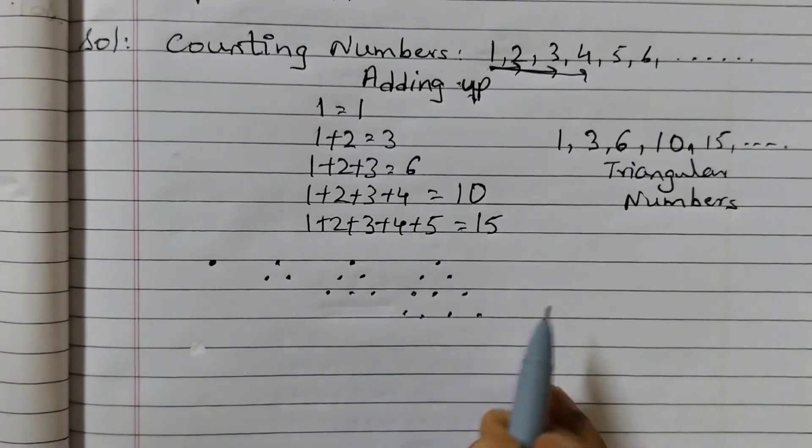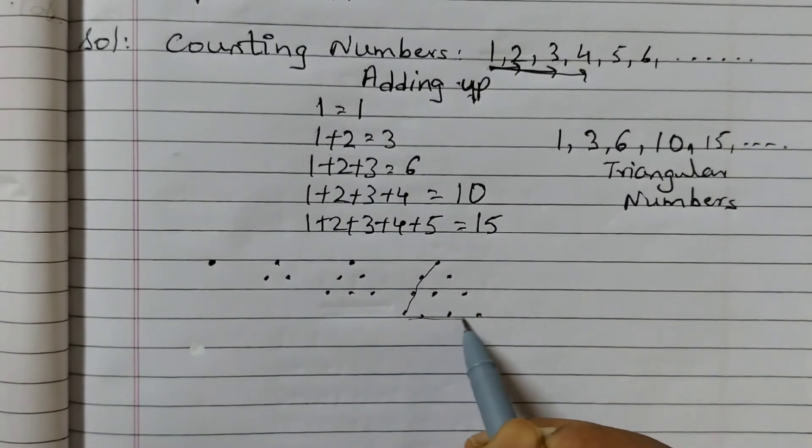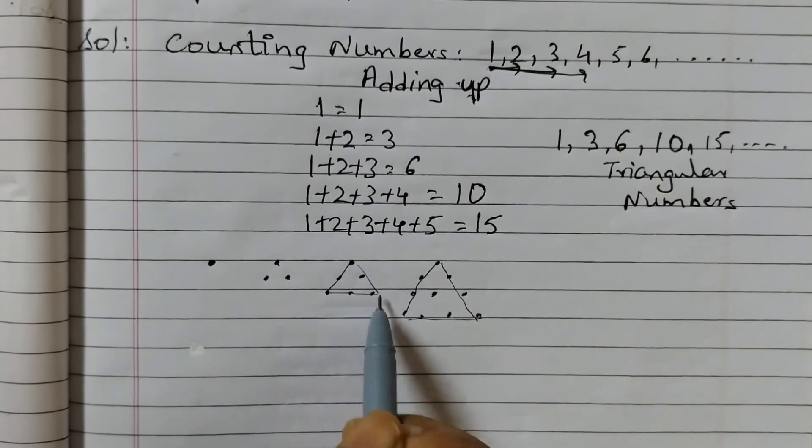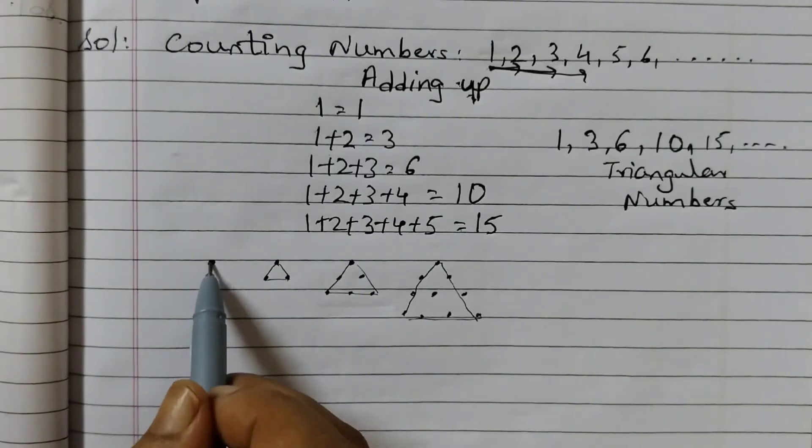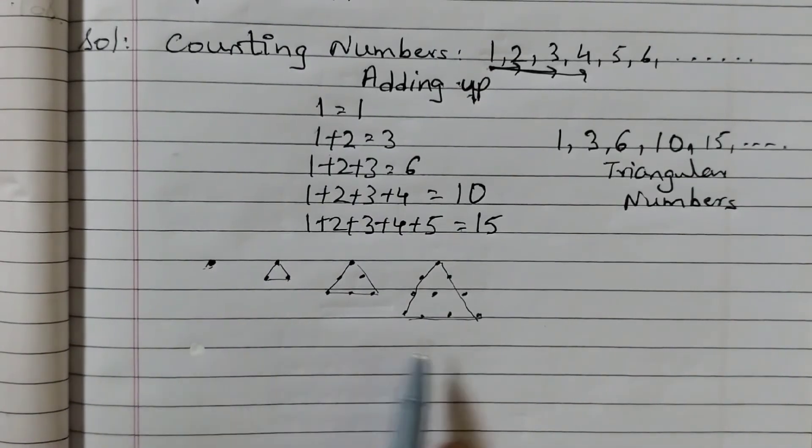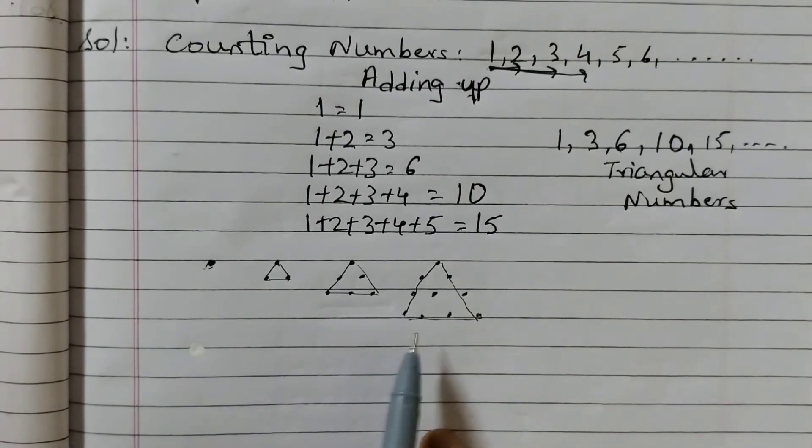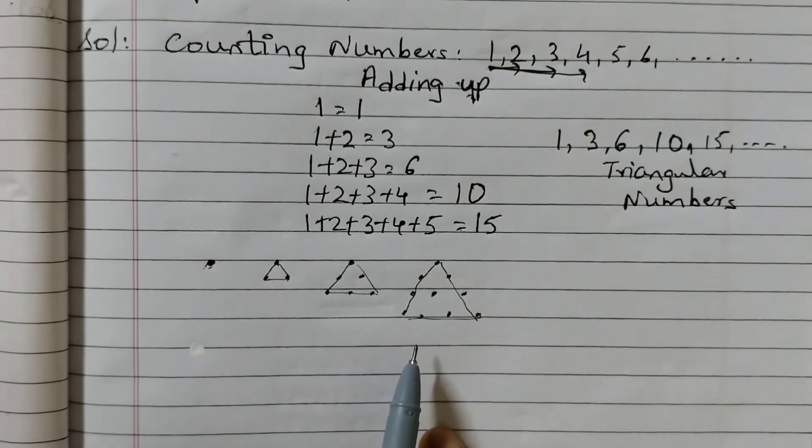So do you see the triangle is formed? Like if I join these points, a triangle is formed here also. And this is just 1 dot. So that's the reason these numbers are called triangular numbers, and this is the pictorial explanation for that.